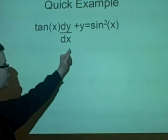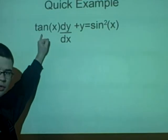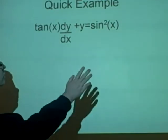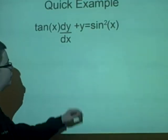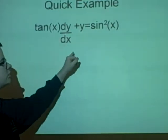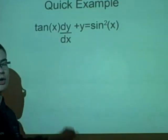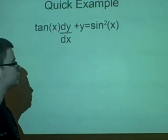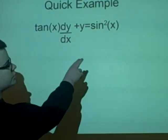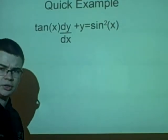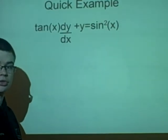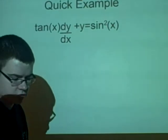We've got to change this first because we cannot have anything in front of the dy/dx. So we divide everything by tan(x). And we'll have dy/dx plus cot(x)y because we're dividing by it and cot(x) is 1 over tan(x). And with the sin squared x we know that sin(x) over tan(x) is equal to cos(x). So we'll have sin(x)cos(x).